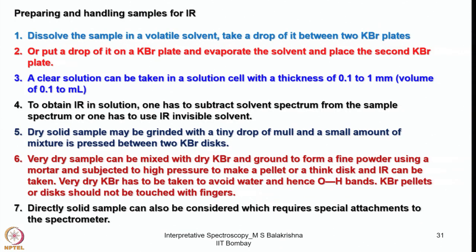Now let us look into how to prepare samples for recording IR spectra. Dissolve the sample in a volatile solvent such as dichloromethane or heptane, take a drop of it between two KBr plates or put a drop on a KBr plate, evaporate the solvent, and place the second KBr plate on top like sandwiching. A neat sample can also be recorded. Alternatively, a clear solution can be taken in a solution cell with a thickness of 0.1 to 1 mm and a volume of about 0.1 ml. To obtain IR in solution, one has to subtract the solvent spectrum from the sample spectrum or use an IR-invisible solvent.